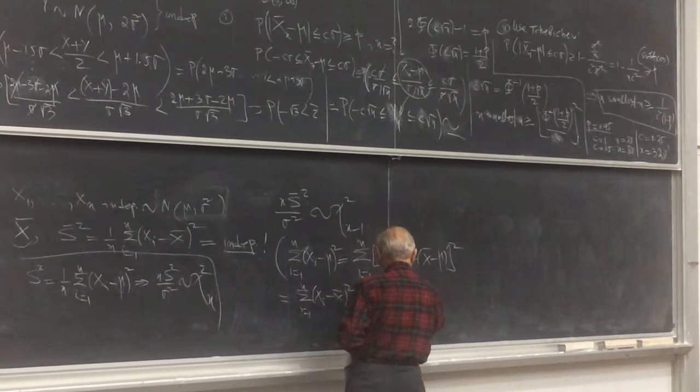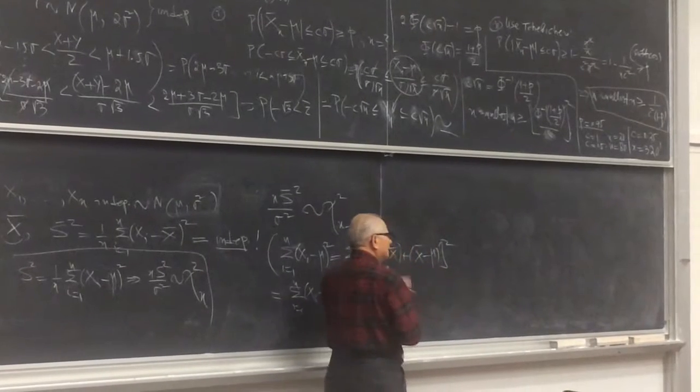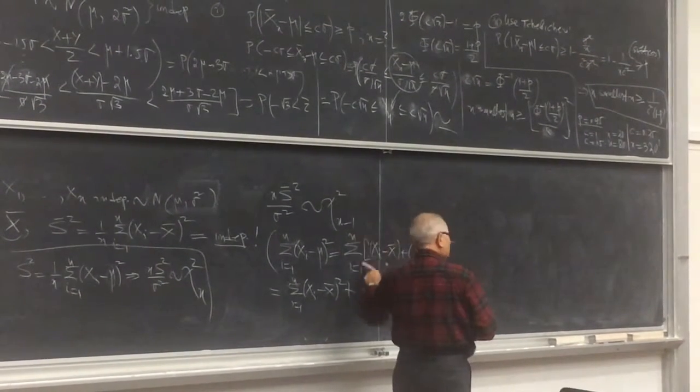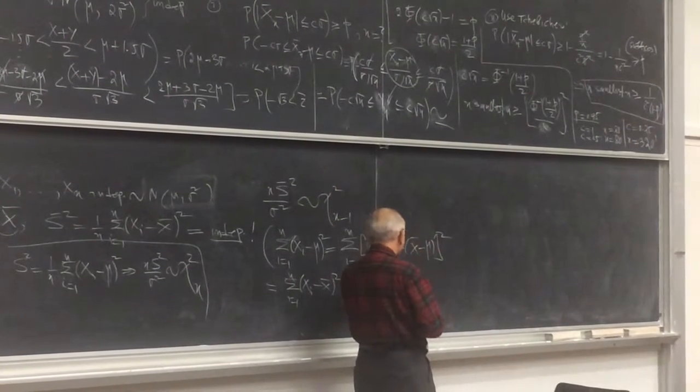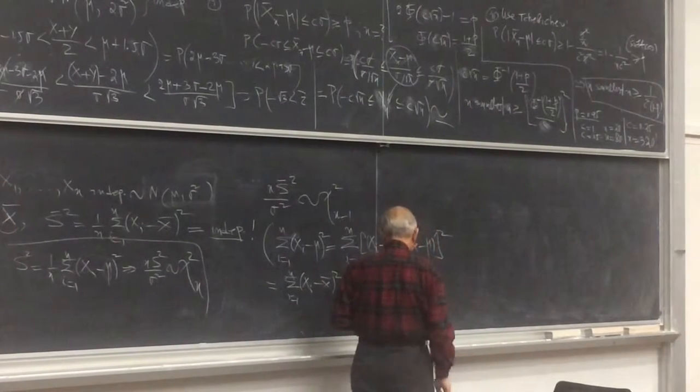This is a constant, comes outside. And the sum of this is equal to 0. The sum of this is n times x-bar. So that's what you get.